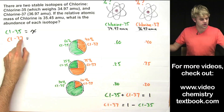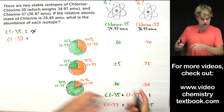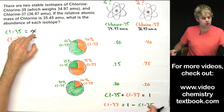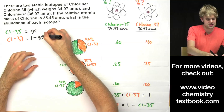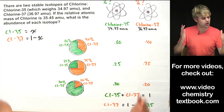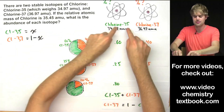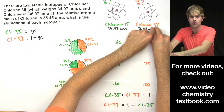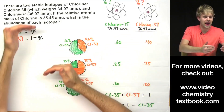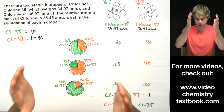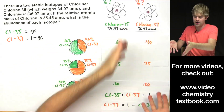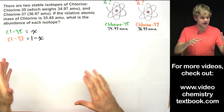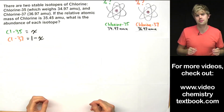So chlorine-37 is going to be 1 minus the amount of chlorine-35, which we're calling x. Here are our two variables: x for the amount of chlorine-35, and 1 minus x for the amount of chlorine-37. Add the two amounts together and we're going to get 100%, or 1 if we're expressing them as decimals. Now we're ready to write an equation that sets these variables up.